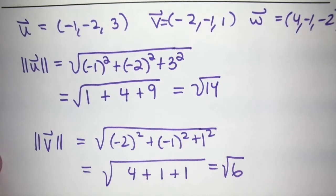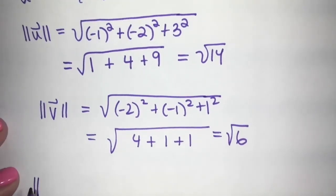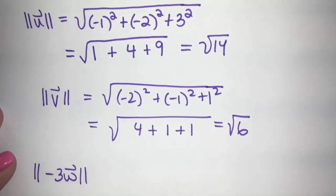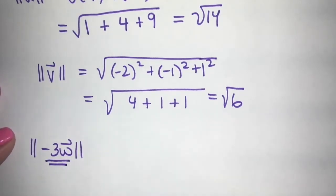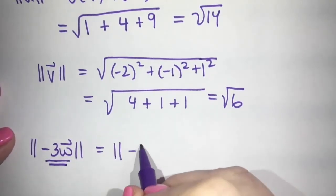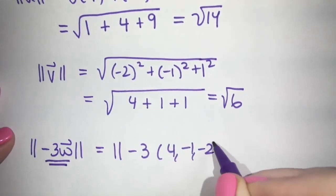Now, what if they asked you for the magnitude of negative three W? So if we wanted magnitude of negative three W, then the first thing we'd have to do is treat this sort of like a bracket. So do the inside. So we do negative three times W first, and then we magnitude it.